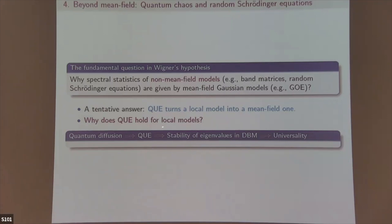Why does the local model want eigenvectors to be completely delocalized? The answer is: if you have quantum diffusion, the diffusion will make the eigenvectors spread — if your system has diffusion, the stuff spreads locally, and once you spread enough, you become delocalized. That's the picture.